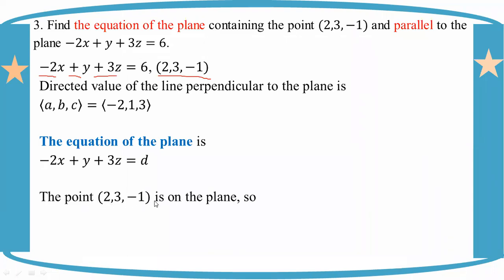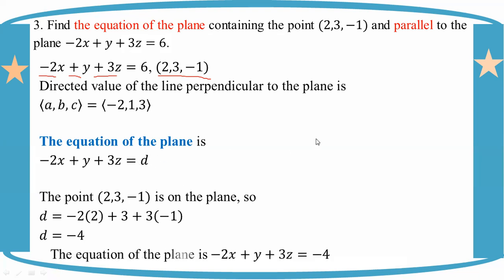Substituting: a is -2, x1 is 2, so ax1 = -4. By1 where b is 1, y1 is 3, equals 3. Cz1 where c is 3, z1 is -1, equals -3. This gives d = -4.